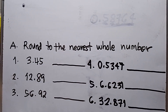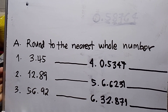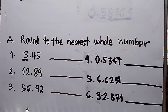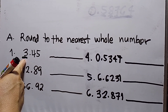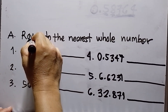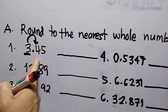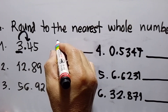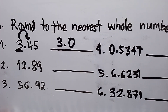Look at letter A: round to the nearest whole number. Number one: I have 3.45, so I underline the ones place. The trick — keep in mind that in rounding decimals, look at the number to the right of the digit to be rounded. I will put an arrow to the next digit. Since this 4 is less than 5, the answer for number one is 3.